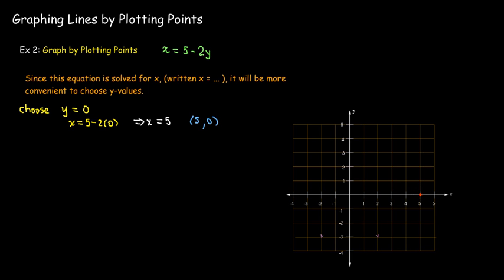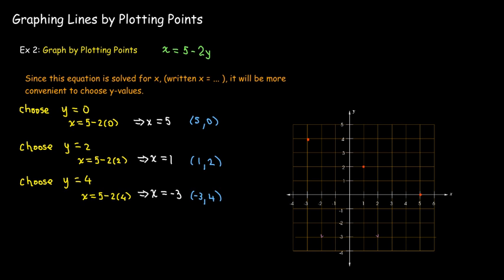I'll choose y equals 2, and then I'll get 5 minus 4, which gives me x equal to 1. So (1, 2). And one more point. I'll choose y equals 4, and so 5 minus 8 is negative 3. So I've got the point (negative 3, 4), which is this point here. Now, when I choose these three lines, if for some reason they don't lie on the same line, then I have to go back and check my arithmetic and maybe my algebra to make sure I didn't make a mistake. Because there must be a mistake somewhere. They should all lie on the same line.